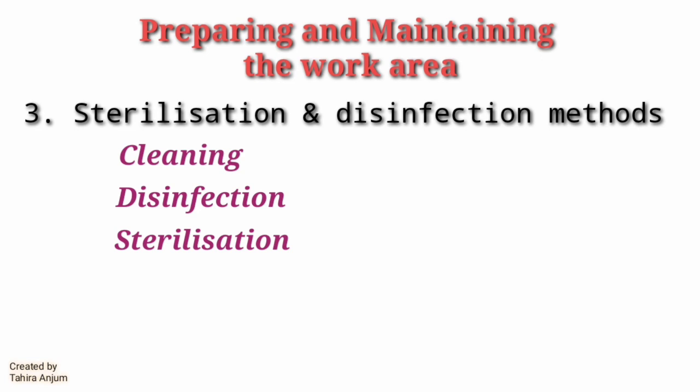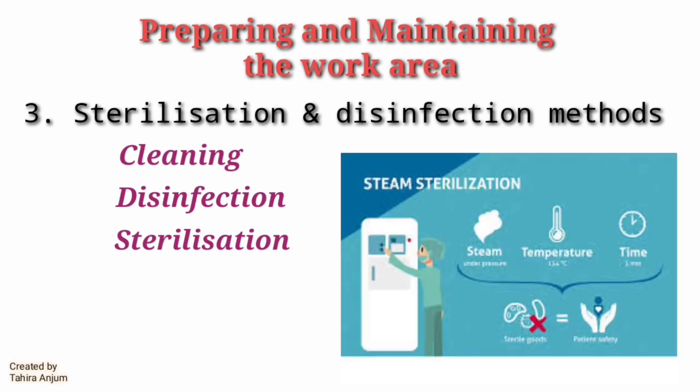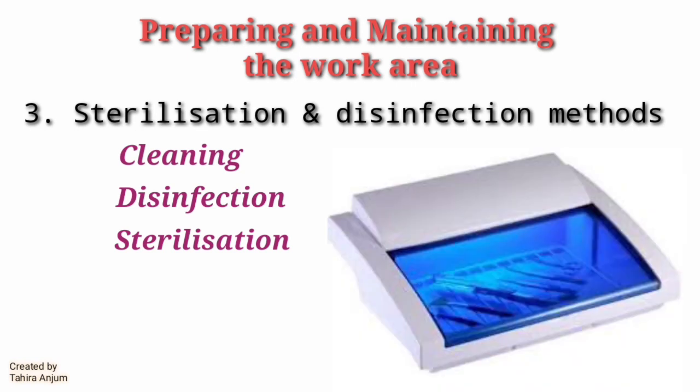Then we use the sterilization process. In this process we use steam. For sterilization, we use an autoclave, which is a closed container with high temperature and pressure. In this process, we can only sterilize metals, such as scissors, tweezers, etc.